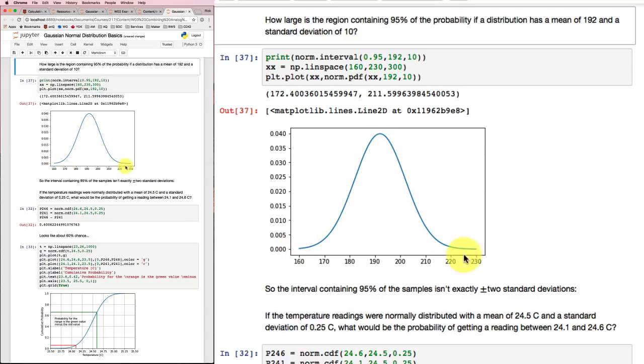And notice the shape is exactly the same as it was when we had a mean of zero and a standard deviation of one. We're just getting different numbers on the axes now.